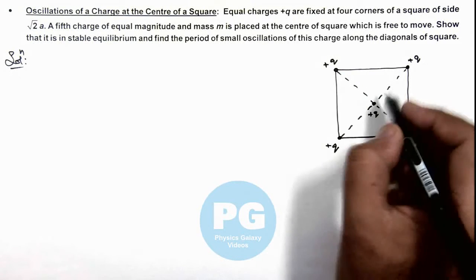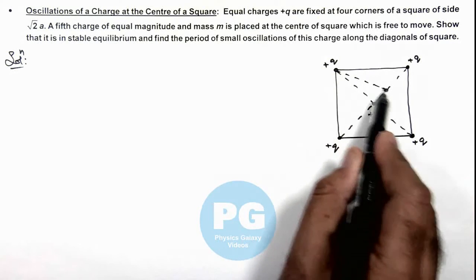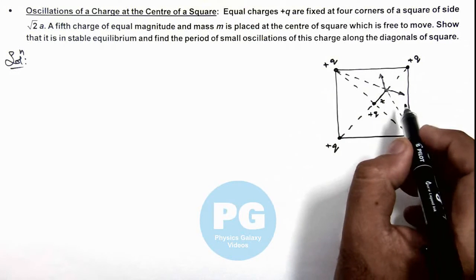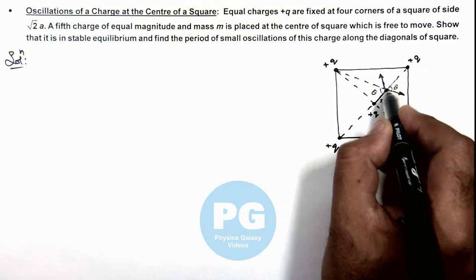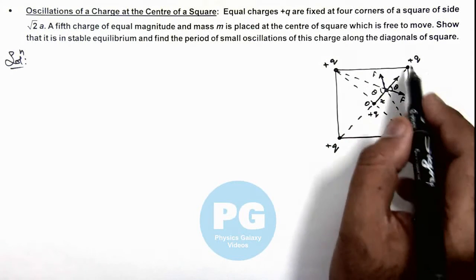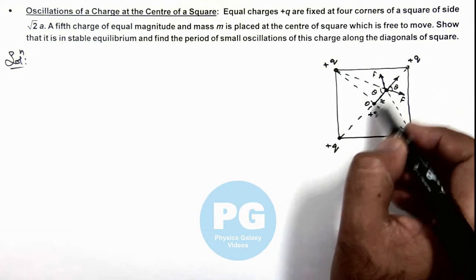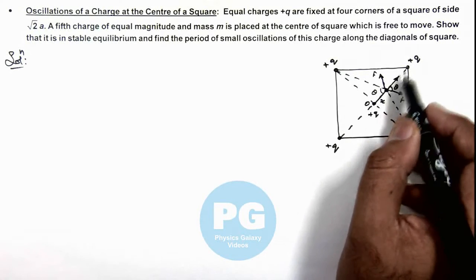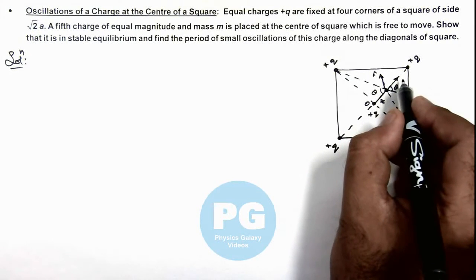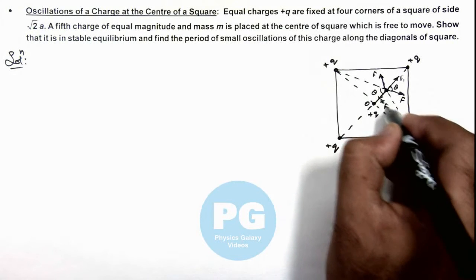Now let's displace the charge by distance x along one diagonal. Then you can see this plus q will exert a force in this direction, and symmetrically this plus q will also repel it in the opposite direction. If this angle is theta, then the force acting on the charge away from the center point is 2f cos theta, if these forces are f. And if we talk about the other two plus q charges, they will also exert force — the closer one exerts a stronger repulsive force. We can call these resultant forces F1 and F2.